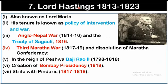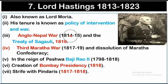The seventh Governor-General was Lord Hastings, also known as Lord Moira, whose tenure was from 1813 to 1823. His tenure was known for the Policy of Intervention and War. The most important event during his tenure was the Anglo-Nepal War, fought between 1814 and 1816, which ended with the Treaty of Sagauli signed in 1816. The Third Maratha War was fought from 1817 to 1819.